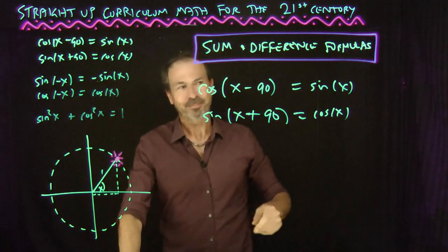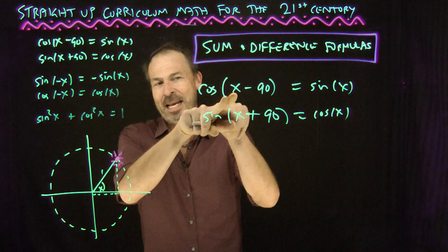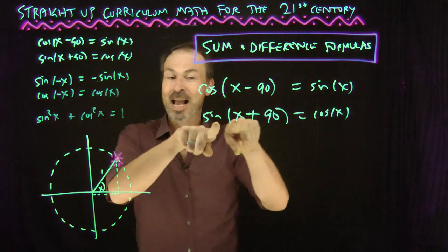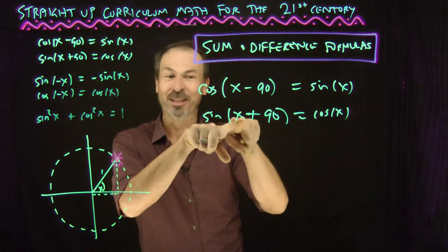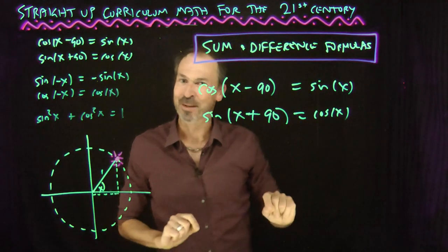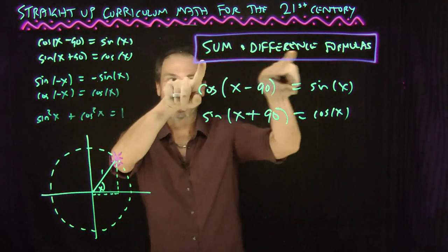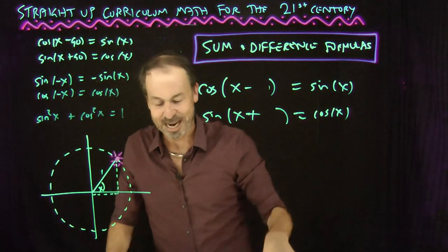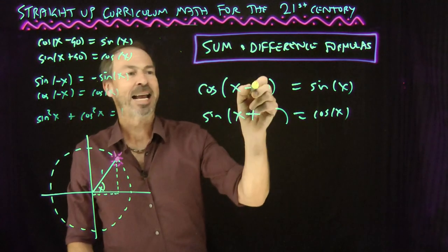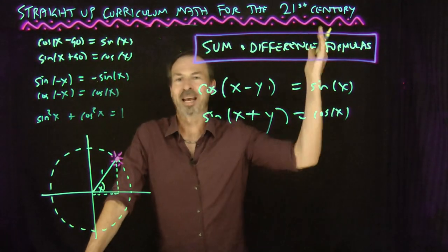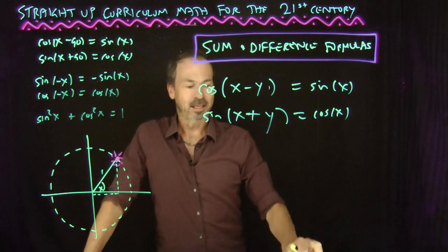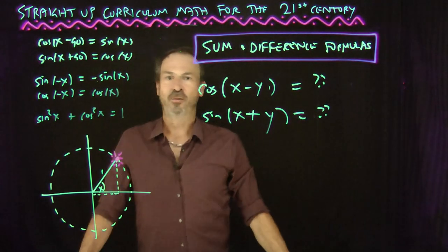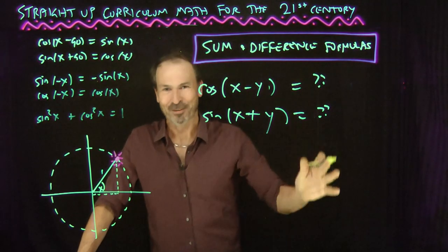But look at this. What I've got here is a formula for cosine of the difference of two angles — an angle x and an angle 90 degrees — that turns out to be a very simple formula. And here I've got a formula for the sine of the sum of two angles, x and 90. It's very natural then to ask: what if I did the sum and differences of not just x and 90 degrees every time, but x and any other angle y? Sum and difference of two general angles x and y — the formula is probably going to be more complicated, so that's what we need to find out.